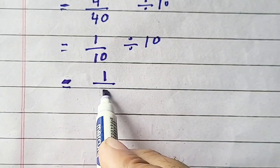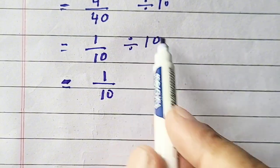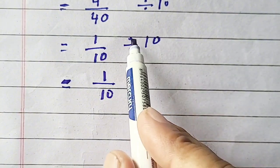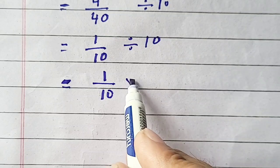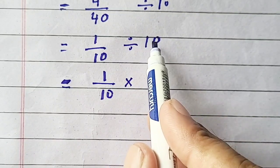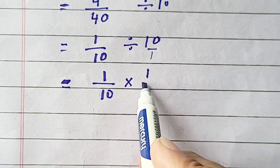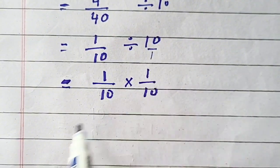1 divided by 10 and now we have a flip rule. Division is converted into multiplication and flip or take reciprocal of 10. It is 10 by 1 so its reciprocal will be 1 by 10.